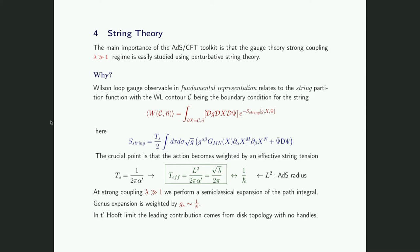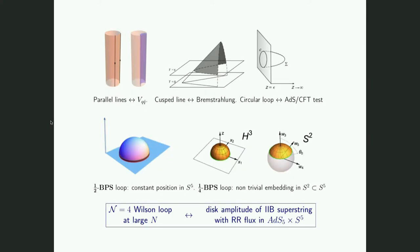The remaining piece is: what is a Wilson loop from the string theory point of view? The Wilson loop has a curve — as Diego was saying, the world sheet has to end on this curve. This is the problem you have to solve, and depending on the curve you choose — two parallel lines, a cusp, a circle — you have different world sheets in the bulk. In technical words, what you have to do is compute the disc amplitude of the type IIb superstring with Ramond-Ramond flux with a precise contour attached to the boundary.